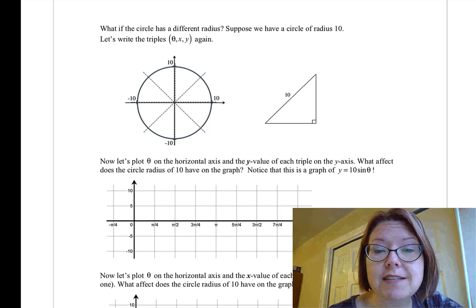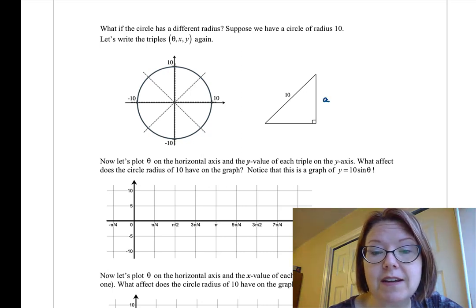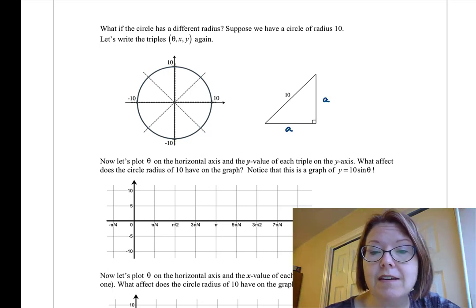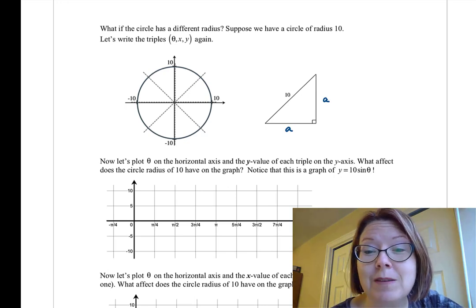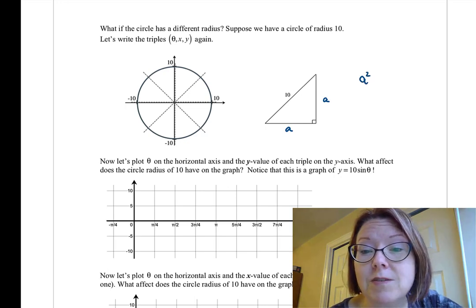So if the radius is 10, we still have two equal sides. We'll call them both A. These are the shorter sides of the isosceles right triangle, and our Pythagorean theorem says that A squared plus A squared equals 10 squared.